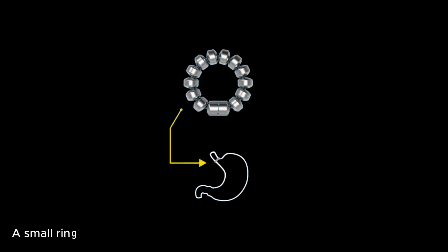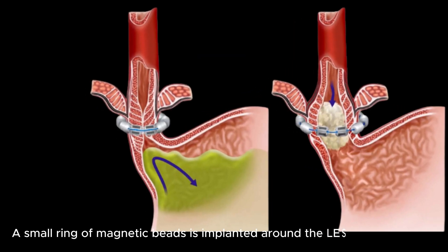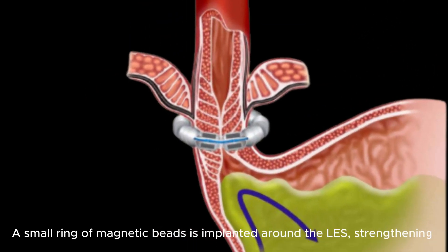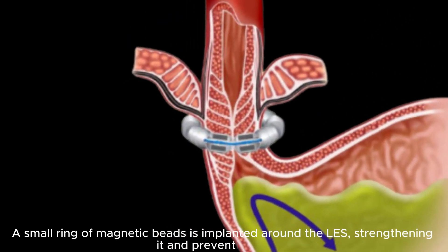In the LINX procedure, a small ring of magnetic beads is implanted around the LES, strengthening it and preventing reflux.